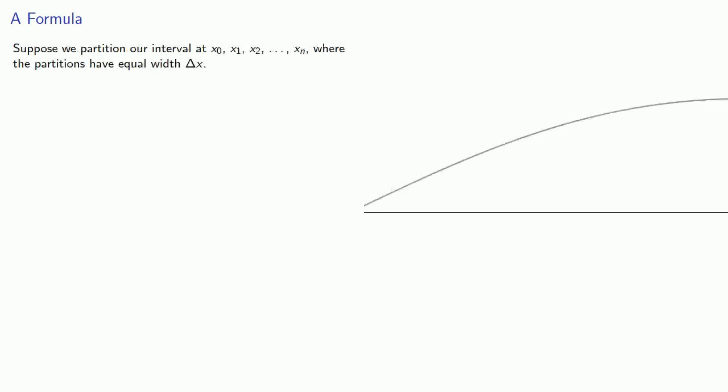So suppose we partition our interval at points x0, x1, x2, and so on, where the partitions have equal width delta x. So we need to know the height of each of these points, so we find their coordinates.